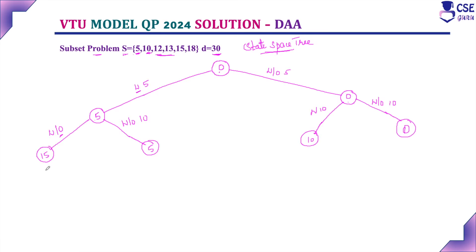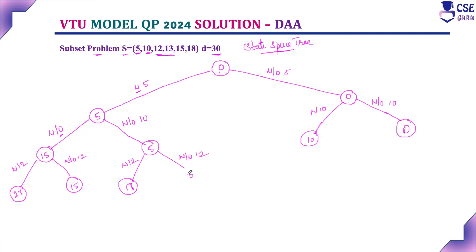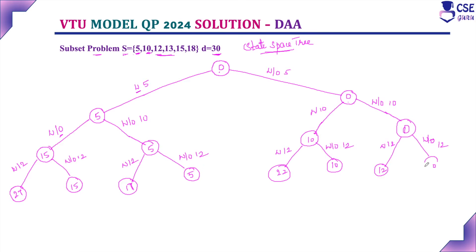The next component is 12. With 12: 15 + 12 = 27. Without 12: 15. With 12 on the next branch: 5 + 12 = 17. Without 12: 5. With 12: 10 + 12 = 22. Without 12: 10. With 12 on the last branch: 0 + 12 = 12. Without 12: 0.